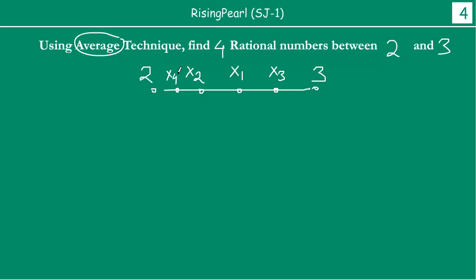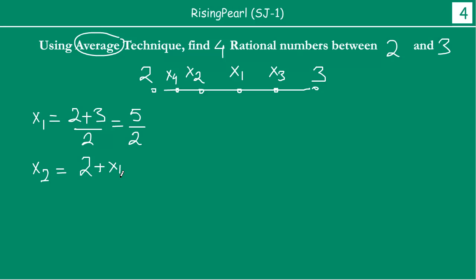Let us do these calculations. First, x1 is the average of 2 and 3, which is 2 plus 3 divided by 2, giving us 5 by 2. So the first rational number x1 is 5/2. Now, x2 is the average of 2 and x1, which is 2 plus x1 divided by 2, equal to 2 plus 5/2, all divided by 2.